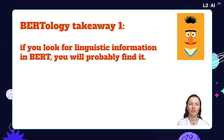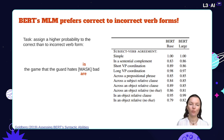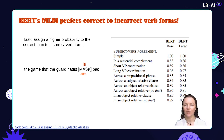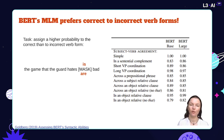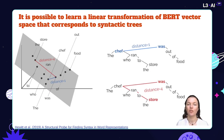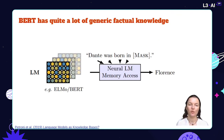Takeaway number one: if you look for linguistic information in BERT, you will probably find it. For example, if you probe the masked language model component of BERT to see whether it prefers correct verb forms to incorrect ones, you will find that yes, it prefers the correct verb form. You will also find that its representations can be transformed to resemble syntactic trees, and that it has a lot of factual and even common-sense knowledge.